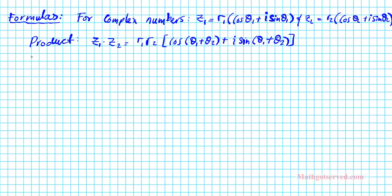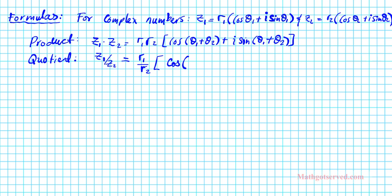Now let's take a look at the quotient formula. For the quotient z1 over z2 — please keep track of the order here — it is equal to r1 over r2 times cosine(theta1 minus theta2) plus i sine(theta1 minus theta2). In the case of the product we multiplied and added; for the quotient we divide the radii and subtract the angles.